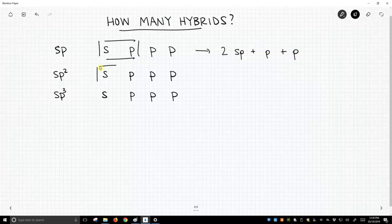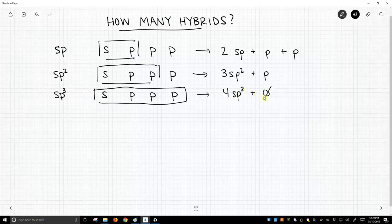And for sp2, we take an s and two p's and we get three sp2s plus a p orbital. And then finally for sp3, we take everything, the s and three p's. We get out four sp3 hybrids plus nothing. There's nothing left over.